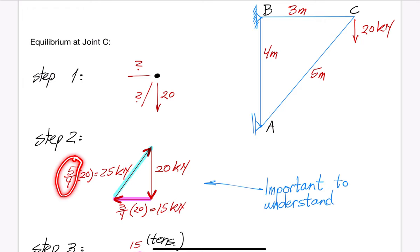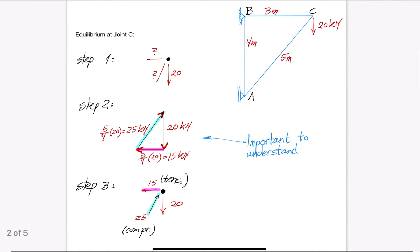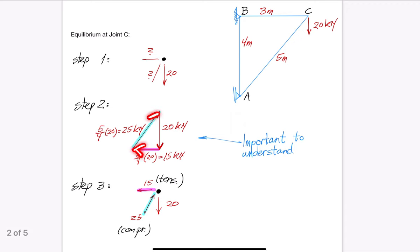Notice that the direction of the force arrows is available from the force polygon. Because that force polygon must be closed with a continuous flow of forces, we can read the arrows off that diagram. That is the reason why we can place the force arrows on the joint in step 3 of this procedure, as shown here.